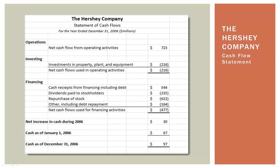Now let's look at investing. Hershey had investments in property, plant, and equipment — a cash outflow of $216 million. Maybe they set up a new plant or upgraded manufacturing equipment. In terms of financing, we see cash receipts from financing including debt. Remember the $100 loan example: when you take out a loan, you have a cash inflow. Hershey had $544 million of cash inflow from financing including debt. Next in the list are dividends paid to stockholders — dividends are not an expense. A dividend is just a cash payment to stockholders, a redistribution of earnings.